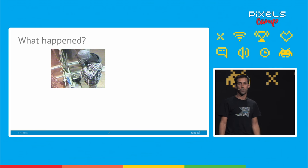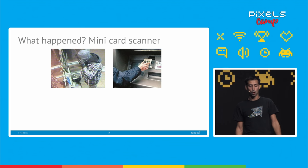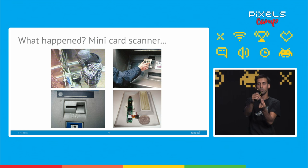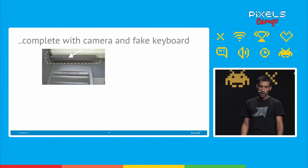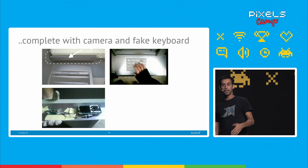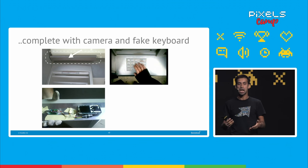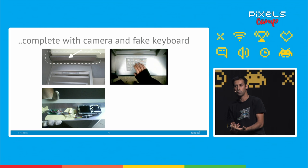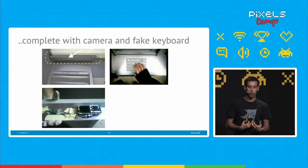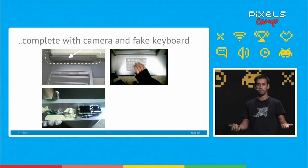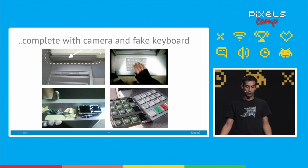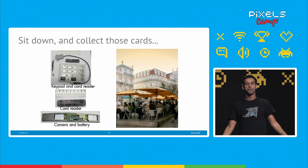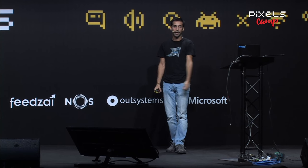So what happened? A fraudster came in and installed a mini scanner — it looks pretty normal, a really small device that can be glued on and nobody will notice. They added a camera to get the PINs, and added a cell phone for communication and battery, because if authorities know the ATM is compromised, it would be dangerous to physically retrieve the cards. If the fraudster can do it at a distance, it's safer. And finally, a keyboard overlay just in case you cover your hands. At that point, they can literally sit down, have a drink, and wait for people to go to the ATM and get their cards stolen.